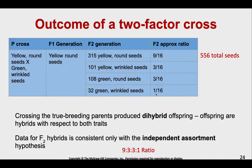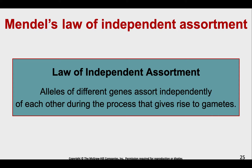In this experiment he created dihybrid offspring, because we're looking at two traits — di- meaning two — different from the monohybrids we looked at in the single-factor cross. And he came up with this idea of independent assortment, which we've already touched on when we talked about meiosis. Alleles of different genes are going to assort independently of each other during the process that gives rise to gametes.